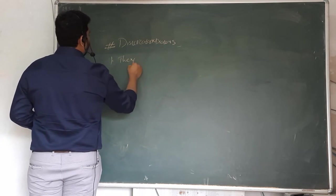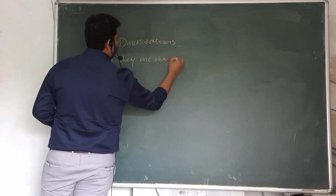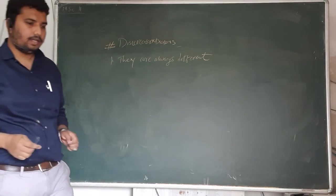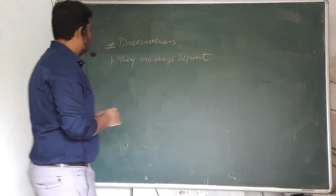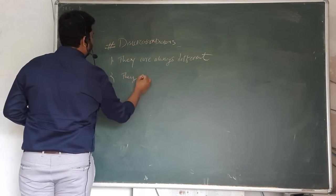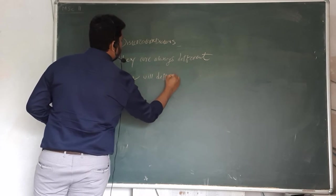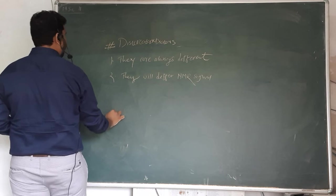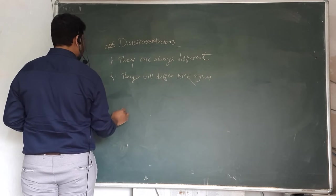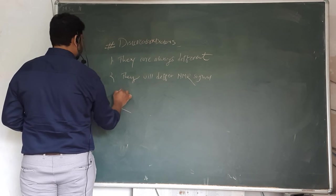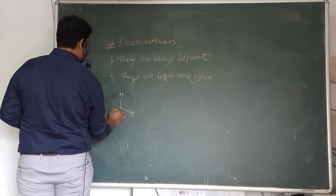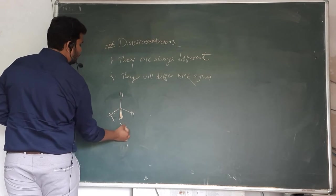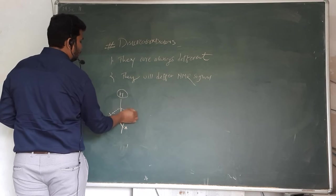Diastereotopic protons are always different — no matter the condition, whether achiral or chiral, they will always be different. So they will show different NMR signals. For example, if there are two different groups X and Y, and the molecule already has one stereocenter, then these will be diastereotopic protons.